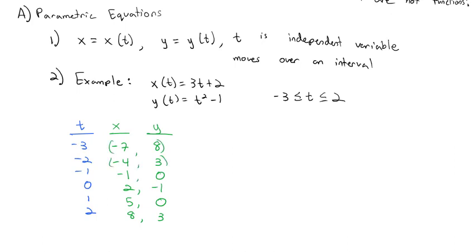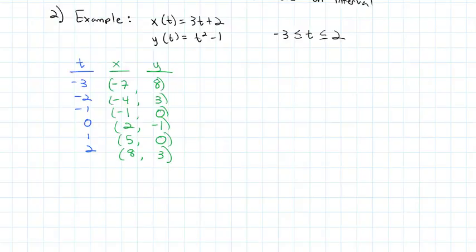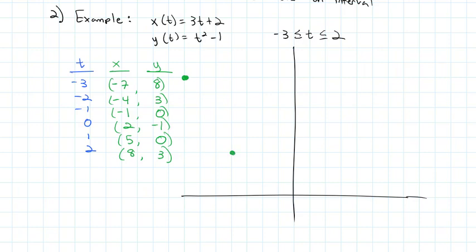This gives us the coordinate points that we can graph to see our function. Popping up some graph paper to help us graph this, x starts at negative 7, comma 8. Then it's negative 4, 3. Then it's negative 1, 0. Then it's 2, negative 1. Then it's 5, 0. And then it's 8, 3.